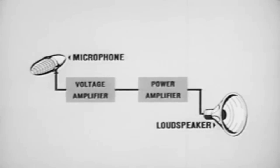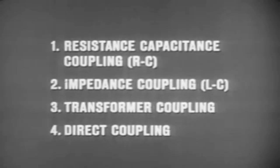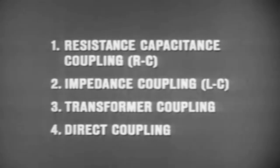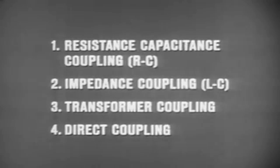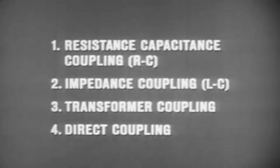There are four general methods for coupling the output of an amplifier stage to a following stage or to a load. They are resistance capacitance, impedance, transformer, and direct coupling. Each method has its own particular advantages and disadvantages and therefore is employed in circuits where its advantages can best be put to use.